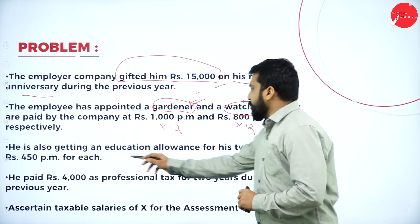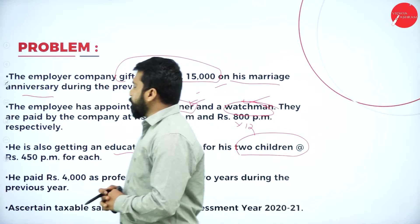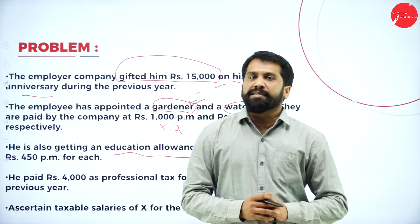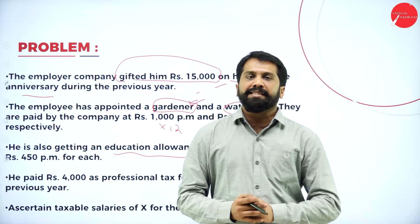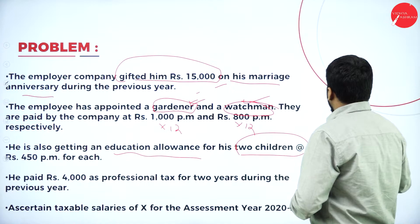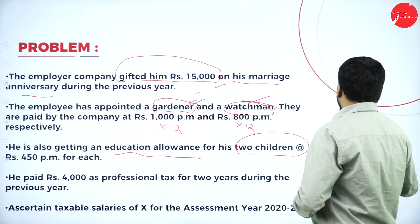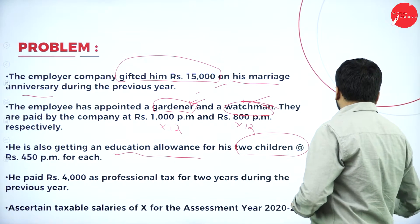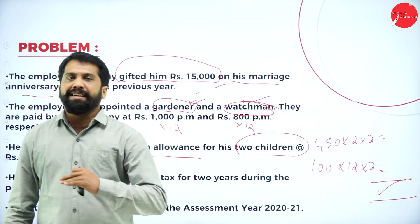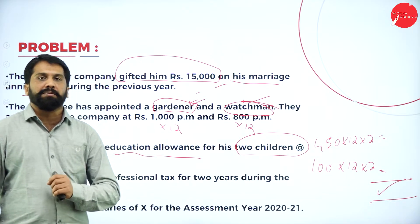He is also getting an education allowance for his two children of rupees 450 per month for each child. The limit for education allowance is up to rupees 100 per child — that is exempt. So calculate 450 into 12 into 2 for total received, and 100 into 12 into 2 for the exemption. The difference is taxable, because as per the Income Tax Act, only up to rupees 100 per child is exempt.